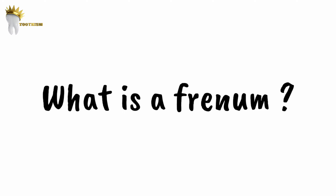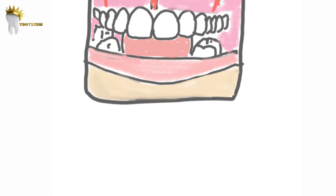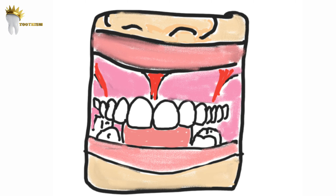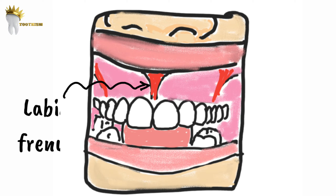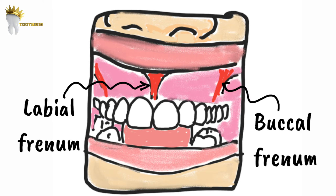A frenum is basically a thin fold of mucous membrane with enclosed muscle fibers that attaches the lips and the cheek to the alveolar mucosa, the gingiva, and the underlying periosteum.